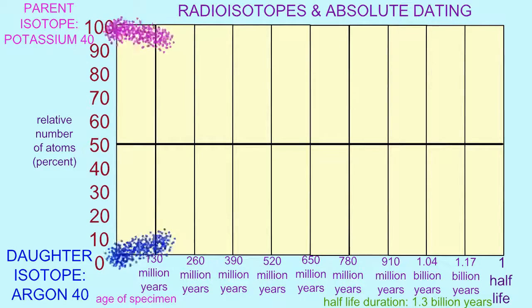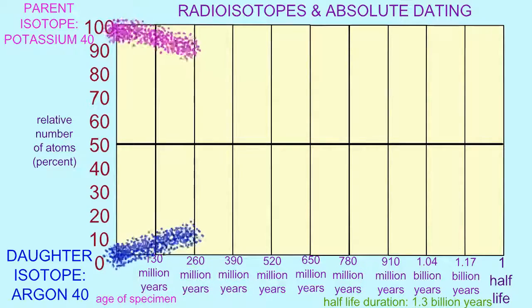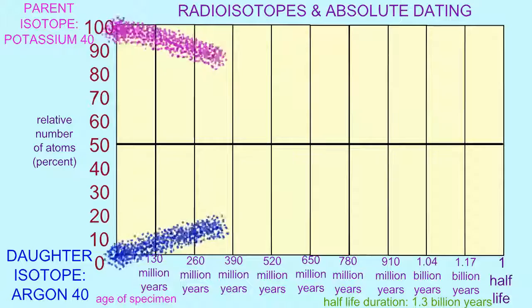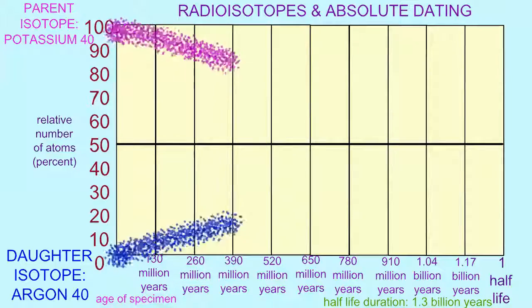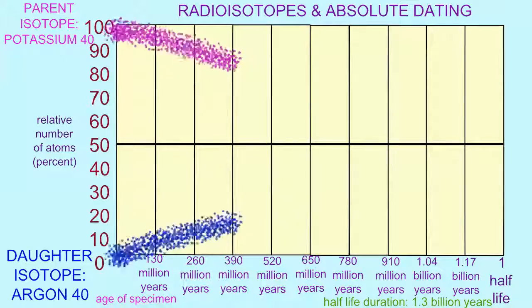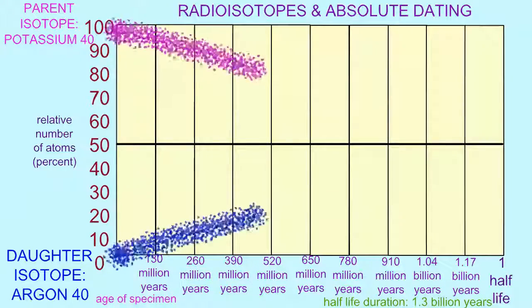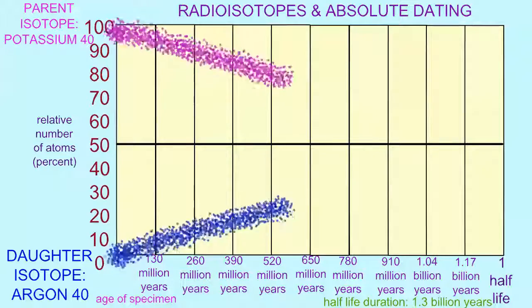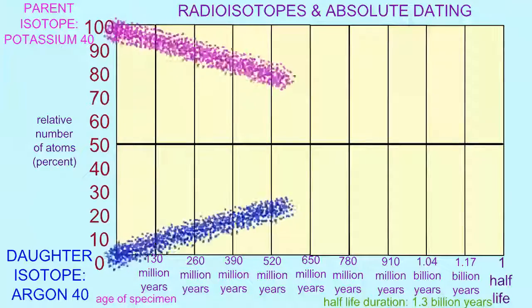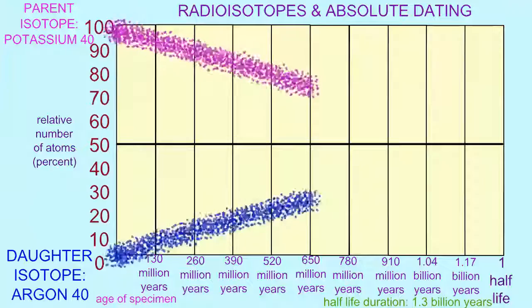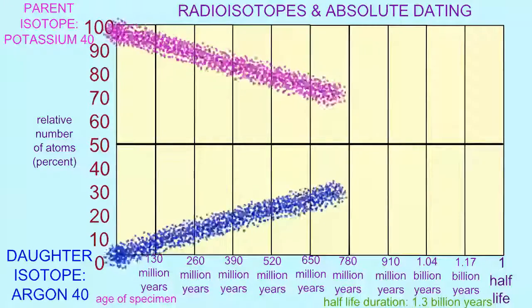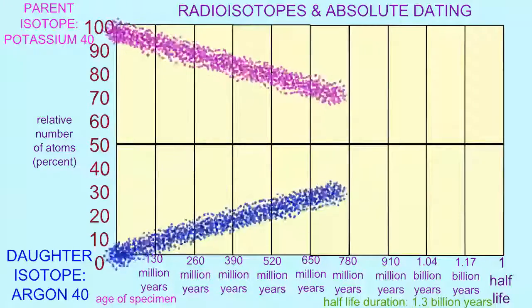Because potassium-40 is radioactive, it will spontaneously decay at a predictable rate. As time goes by, the amount of potassium decreases, and the amount of argon, its daughter isotope, which is now trapped in the volcanic rock, will increase at the same rate.